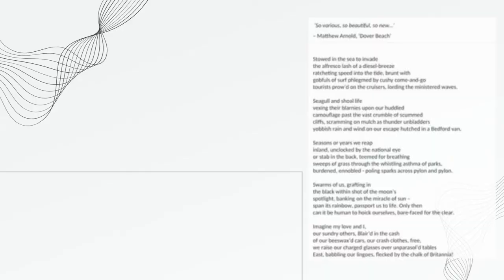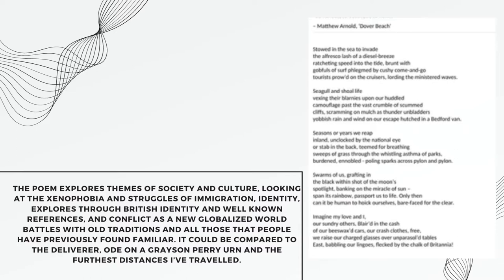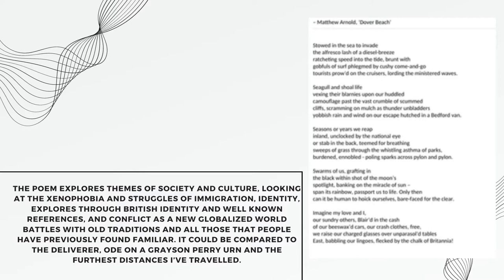The poem considers immigration to the UK and how different cultures emerge in different countries. There's a description of immigrants arriving to the UK, landing on British soil, and going through a whole load of problems before they can actually be admitted, because the host country does not want to accept them, as they come both illegally and legally, trying to make a better life for themselves. The poem explores themes of society and culture, looking at xenophobia and struggles of identity and immigration, through British identity and well-known references, and conflict as a globalized world battles with old traditions changing.